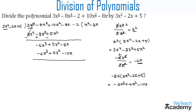Now let us subtract. The additive inverse of minus 6x³ is plus 6x³, of plus 4x² is minus 4x², and of minus 10x is plus 10x. The minus 6x³ and plus 6x³ cancel; 5x² minus 4x² gives x²; and minus 8x plus 10x gives plus 2x. We bring down the constant term minus 2 to get the new dividend x² plus 2x minus 2.